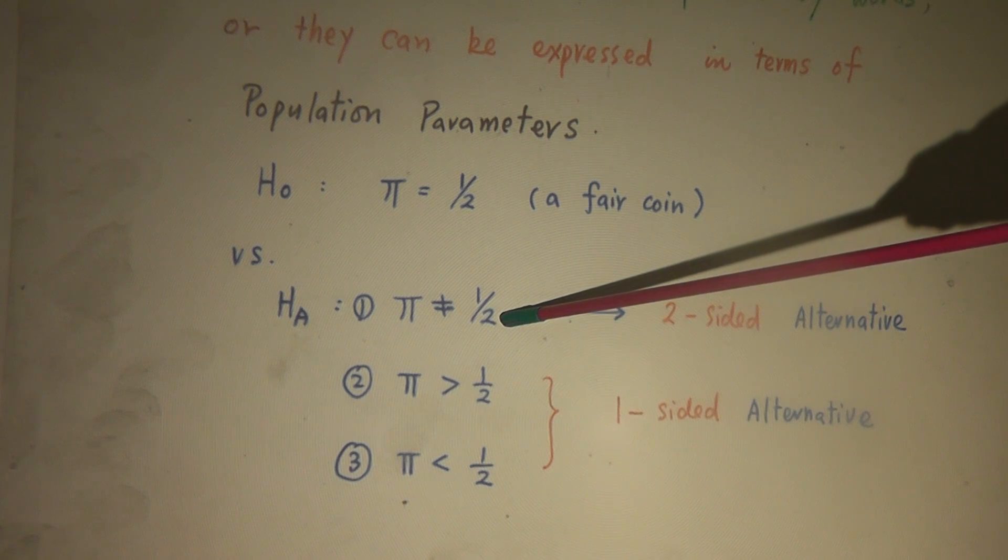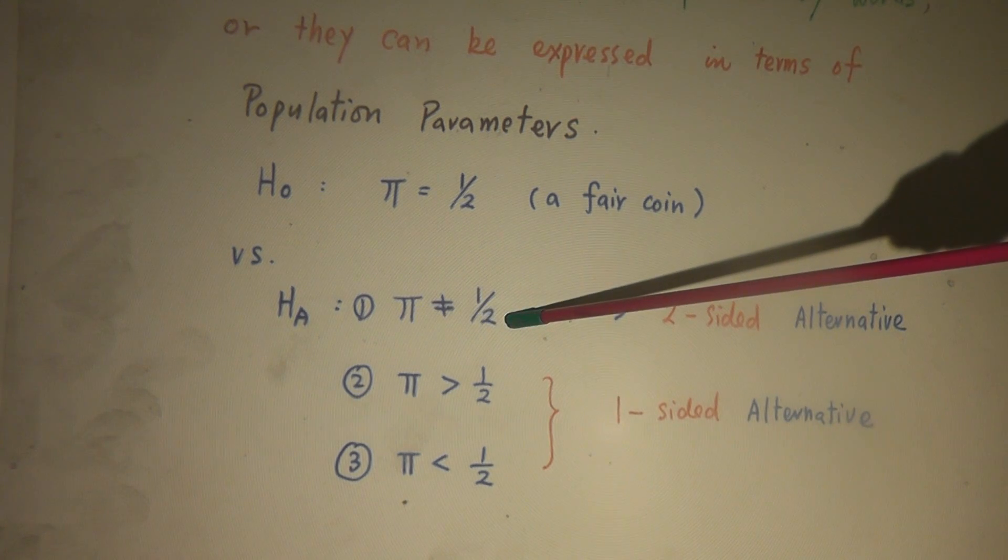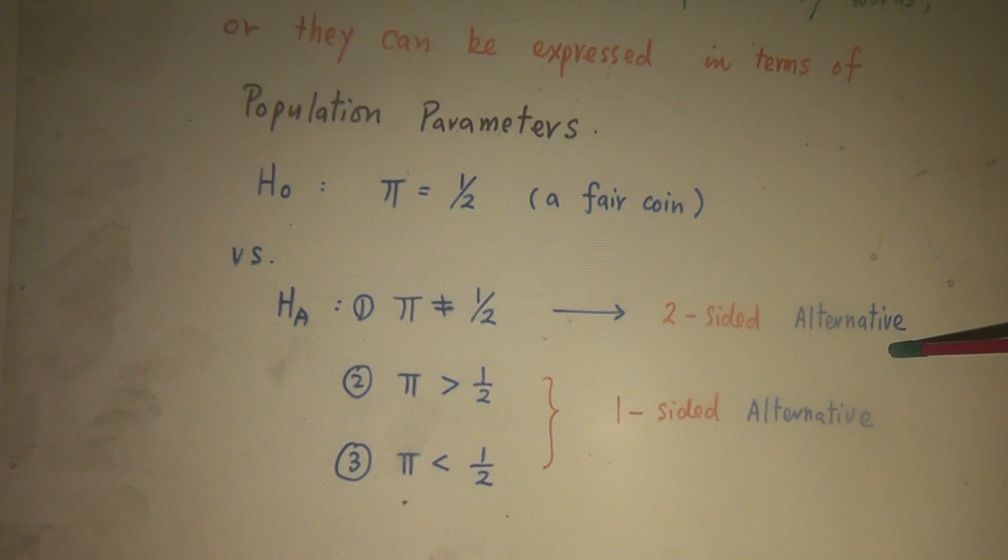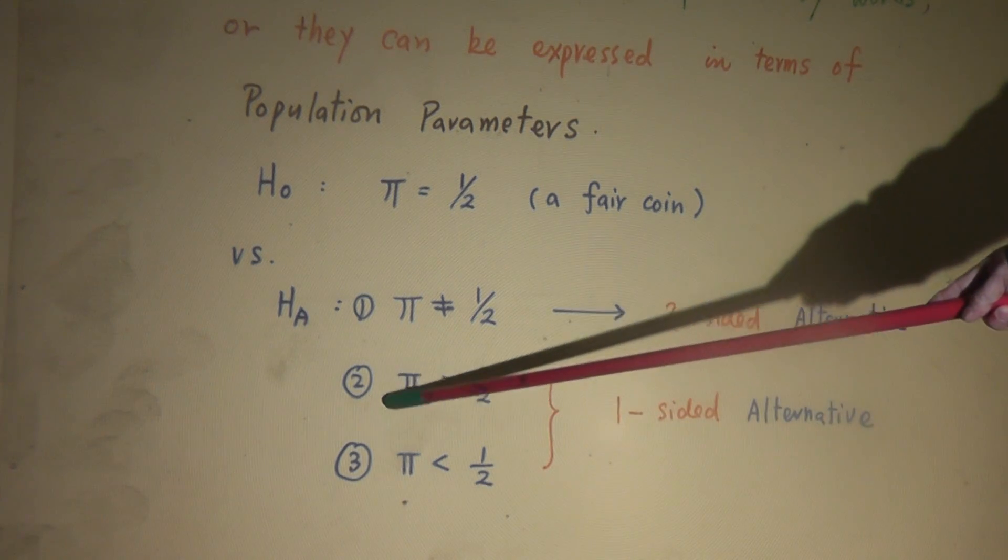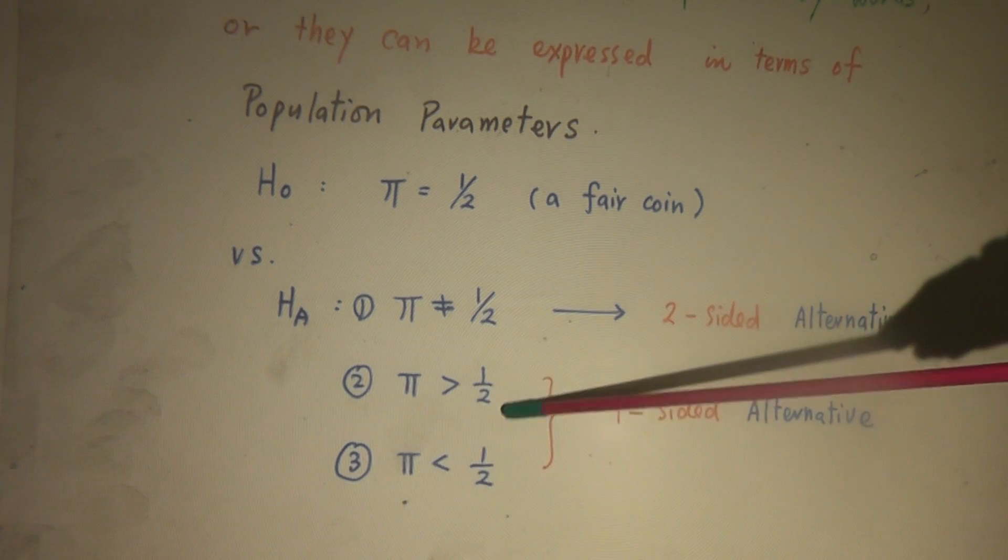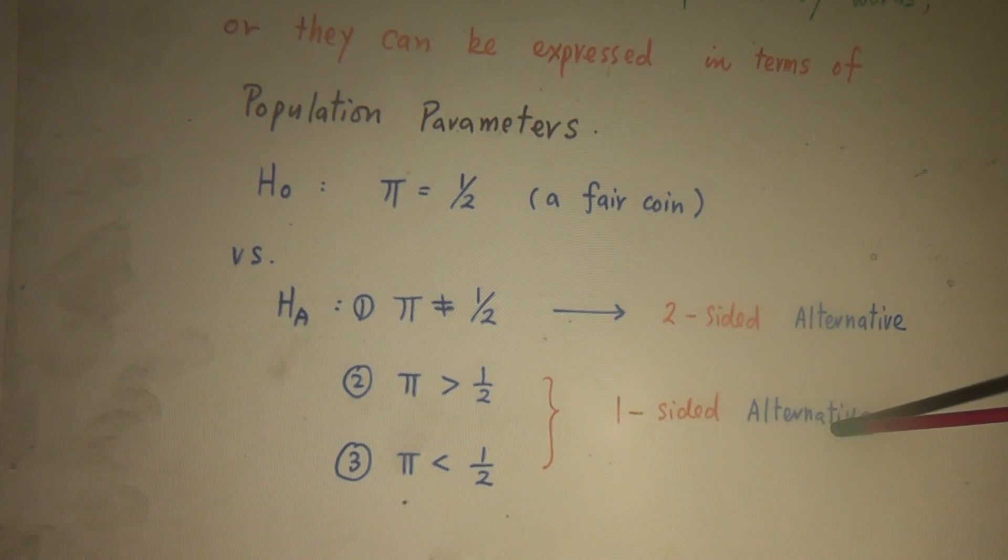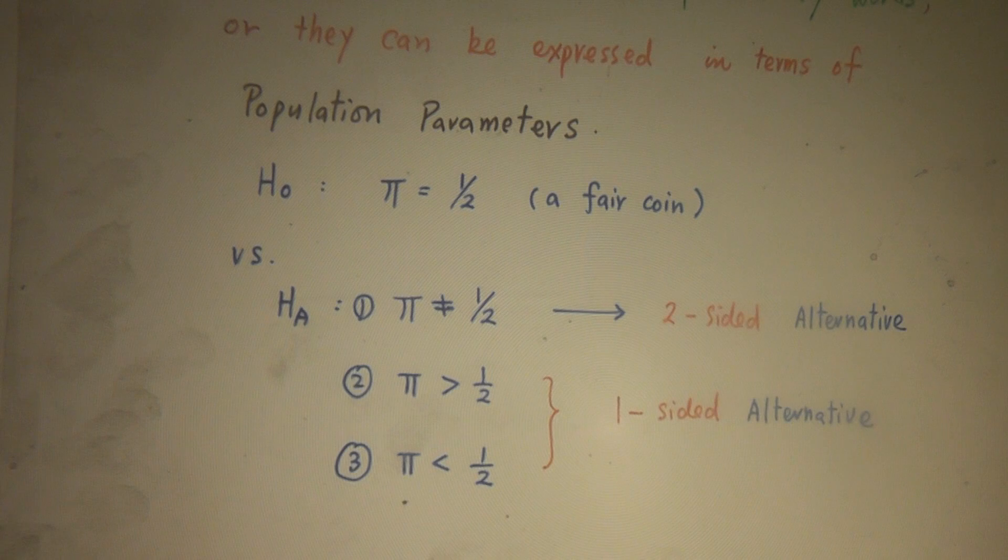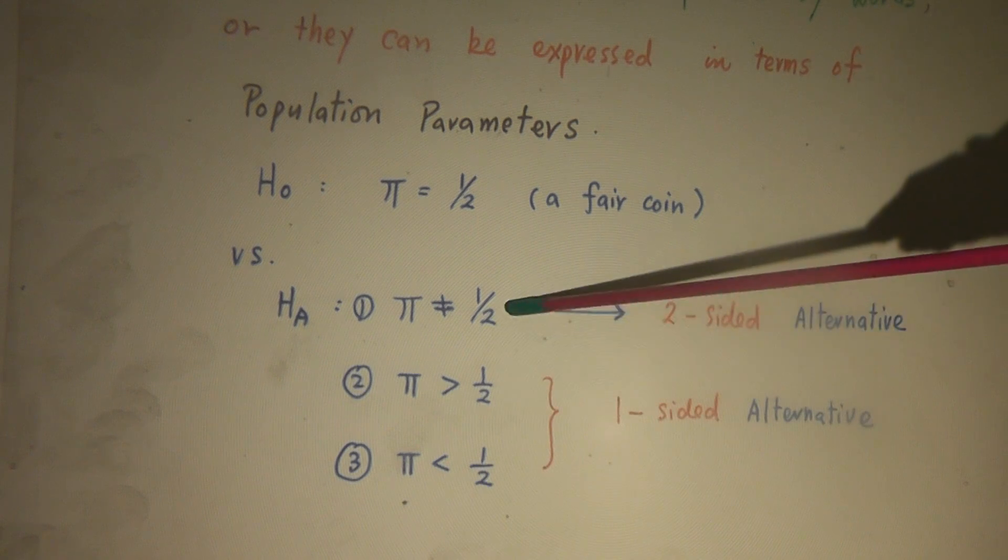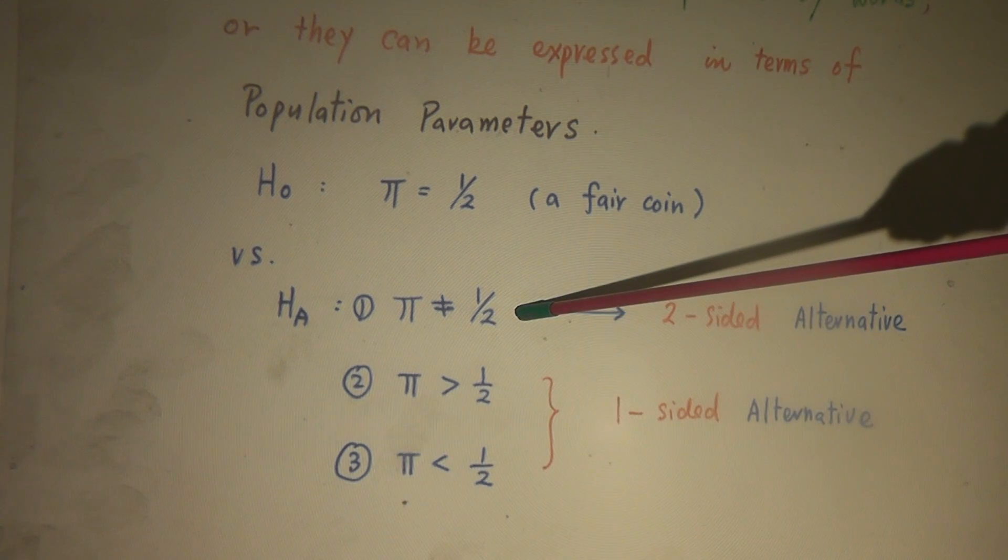I can either say, well, H0 is not true because π is not equal to 50%. When you see not equal, this is what we call two-sided alternative. Or you can say π zero is not true because π is greater than one half, or π is less than one half. These two are what we call one-sided alternative. And which one to use depends on the researcher's interest. Suppose I pick up this one. π is not equal to 50%. Suppose for this hypothesis testing example, I pick up one: π is not equal to 50%.